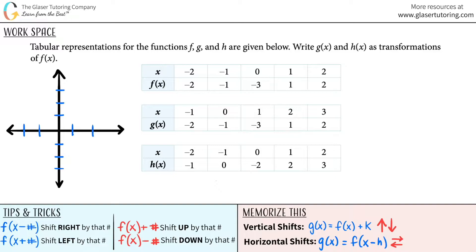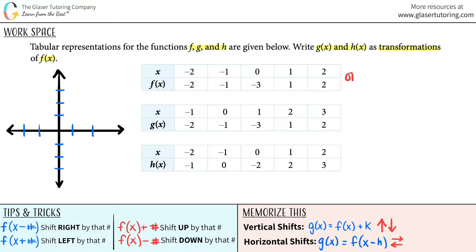Tabular representations for the functions f, g, and h are given below. Write g of x and h of x as transformations of f of x. So I have f of x, g of x, and h of x here. This box right here is representing the original function, and then the other ones are technically transformations of the original.